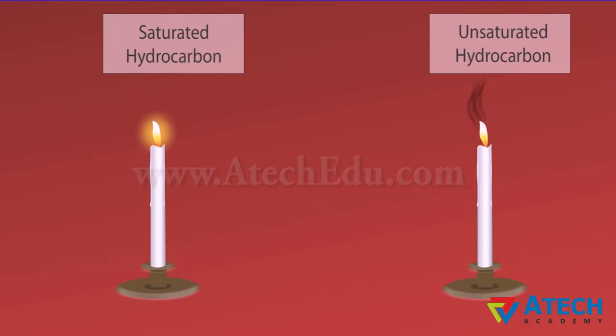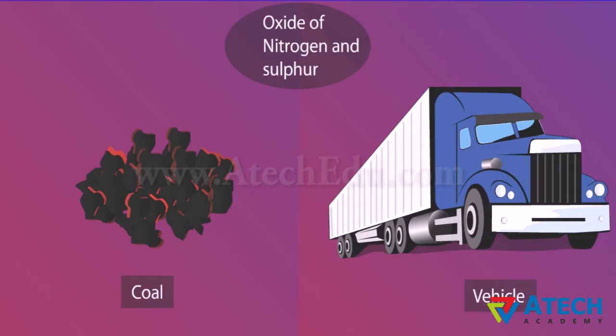Saturated hydrocarbons give clean flame while unsaturated carbon compounds give yellow flame with lots of black smoke. Limiting the supply of air results in incomplete combustion of even saturated hydrocarbons, giving a sooty flame. Fuels like coke and coal and petroleum have nitrogen and sulfur in them, therefore their combustion results in formation of oxides of sulfur and nitrogen which causes pollution of air.